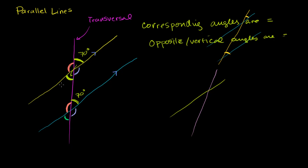So if one angle is 70 degrees, then the angle opposite to it is also 70 degrees. And if that corresponding angle is 70 degrees, then the angle opposite to it is also 70 degrees. No matter what one angle is, its opposite will be the same, because corresponding angles are equal and opposite angles are equal.